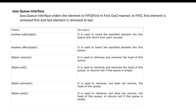Now let's look at Queue. Queue is FIFO — first in, first out. Whatever comes first is the first to go out. Queue has several methods: add, offer, remove, poll, element, and peek. Add is used to insert a specified element into the queue. Offer inserts the specified element into the queue. Remove removes the head of the queue. Poll retrieves and removes the head of the queue, or returns null if the queue is empty.